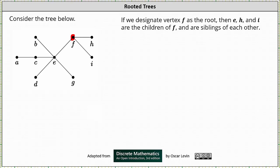Notice if F is the root, then the vertices E, H, and I are children of F and are siblings of each other. The three vertices are children of F because all three vertices are adjacent to F. Any vertex that is adjacent to the root is going to be a child of the root, and the root will be the parent. Because they all share the same parent, E, H, and I are siblings.